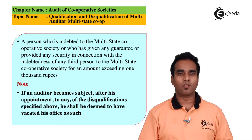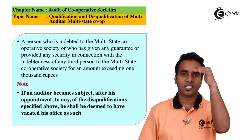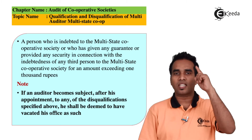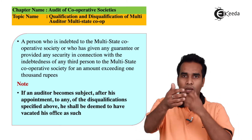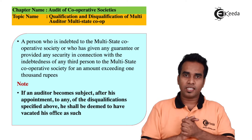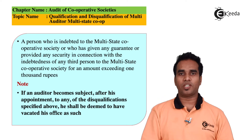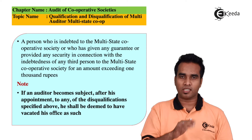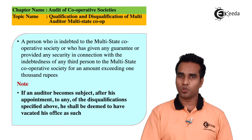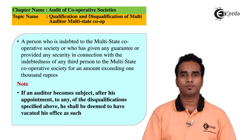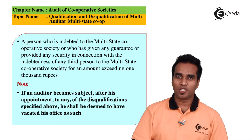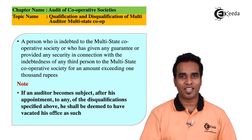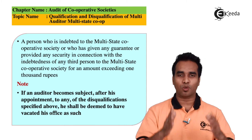To summarize: in the earlier slides we discussed qualifications — only a CA can conduct the audit. Then we covered four disqualification points for Multi-State Cooperative Society auditors, and one important note provision. Thank you so much friends for watching this video. Please like and subscribe to our channel, Heekira.